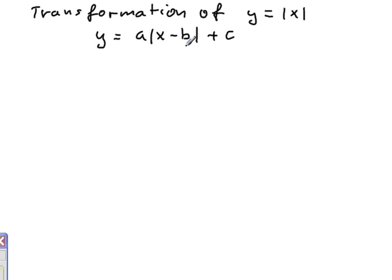So b, that value, is related to horizontal shift. So either you're going to shift it to the left or to the right. And c value would represent the vertical shift.